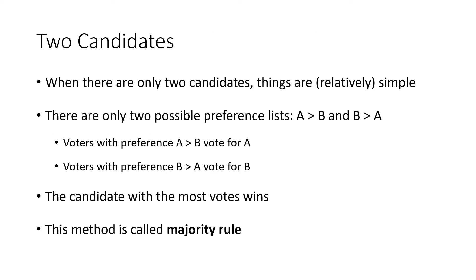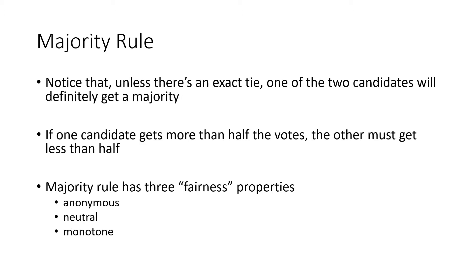When there's only two candidates, things are relatively simple. We talked about preference lists in the previous lecture, but when there's only two candidates there's only two possible preference lists. Either you like A more than B and you vote for A, or you like B more than A and you vote for B. The candidate with the most votes wins, and this method is called majority rule. We call it majority rule because it guarantees one of the two candidates is going to get a majority — more than half the votes — as long as there's not an exact tie.